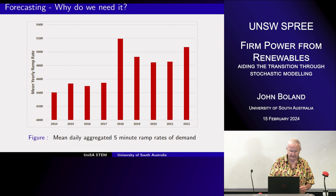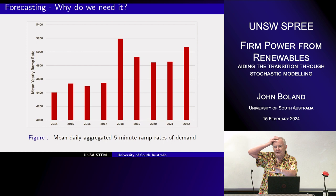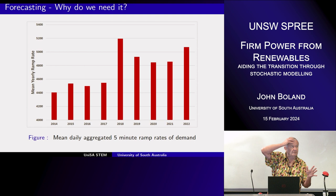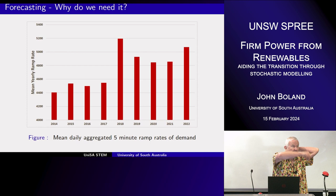Moving to forecasting — why do we need it? If you have storage systems, one of the things you want to figure out is what output you expect from your variable renewables in the next five minutes, half hour, or day. Will you send output to batteries, to Snowy 2 if it ever exists, or directly to supply demand? You have to make these decisions, so you need to forecast what you expect.